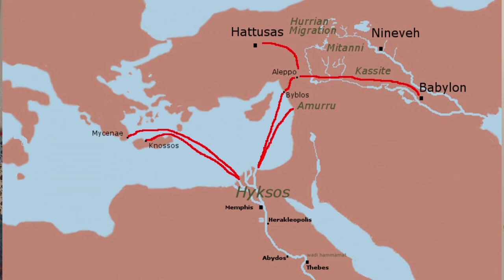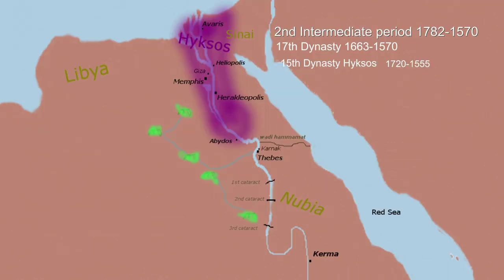The next dynasty to stand up was the 17th dynasty, which were priests in Thebes who learned how to make compound bows and how to use horses and chariots. They united people around Thebes to build an army and kicked the Hyksos out of Egypt. It was the 18th dynasty that finished the job of pushing the Hyksos right out of Egypt. We will talk about the 17th and 18th dynasties in the episode on the New Kingdom period of Egypt.